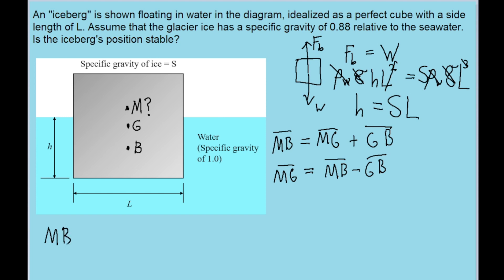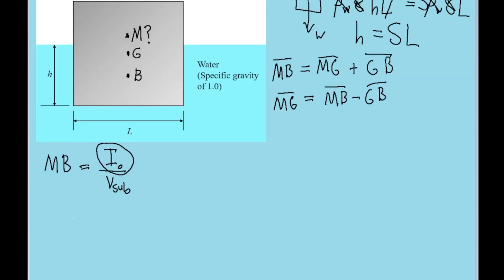Let's find a better formula for MG. The length of MB actually has its own formula. It is equal to the second moment of area of the waterline area through the axis of rotation divided by the volume of the submerged portion of the object. The waterline area of this object is the area over which it touches the water. If you were in the sky looking down, this square perimeter is what we need to find the second moment of area of.